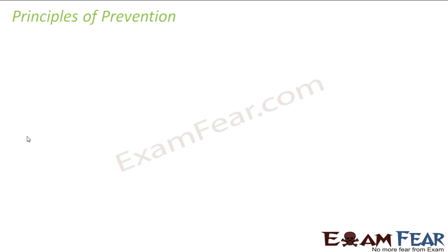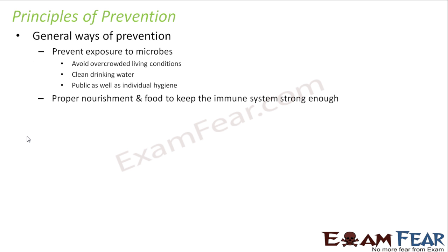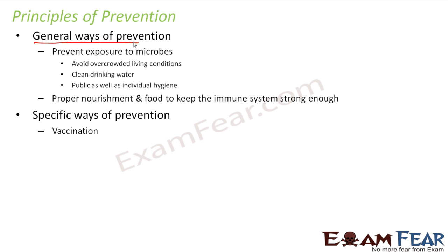Now, what are the principles to prevent diseases? There are two ways of preventing infectious diseases. The first is a general way — applicable to any kind of infectious disease. The second is specific ways of prevention, which are very specific to a particular disease and are therefore called specific ways of prevention.